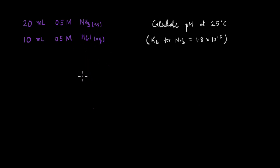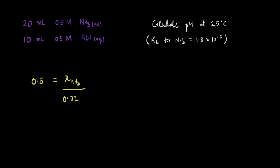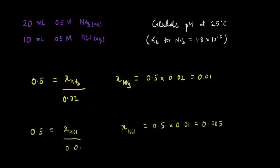To calculate the number of moles, we know that molarity is given in moles per liter. So the number of moles of NH₃ divided by the volume of NH₃ in liters equals the molarity of 0.5. Solving this, the number of moles of NH₃ is 0.5 × 0.02 = 0.01. Similarly, the number of moles of HCl is 0.005.